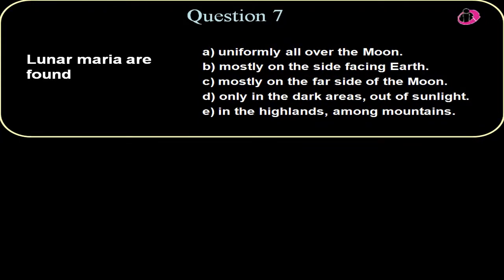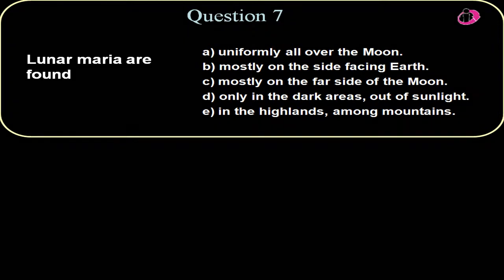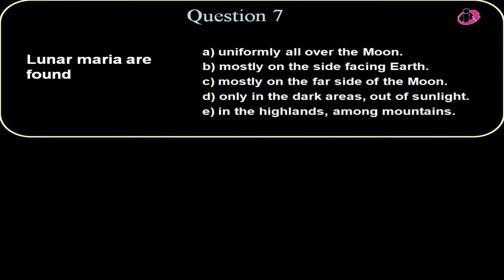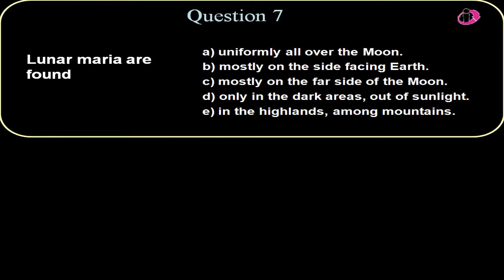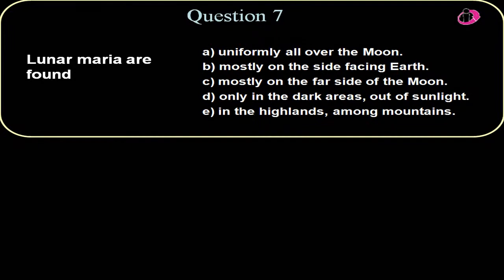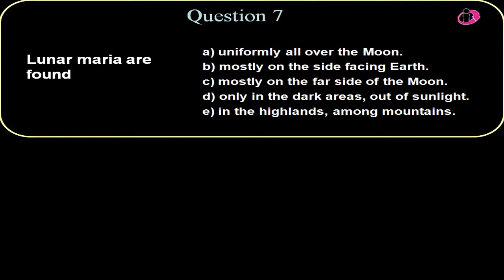Question seven, lunar maria are found uniformly all over the moon? Well, you know, they are found on the far side but very few. It's mostly on the near side facing the Earth due to the Earth's pull tidal effect on the inner part of the moon. The denser part of the moon at one time was able to be pulled out on the near side facing the Earth. So that would be answer B.